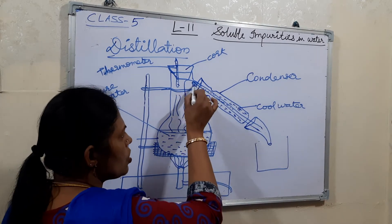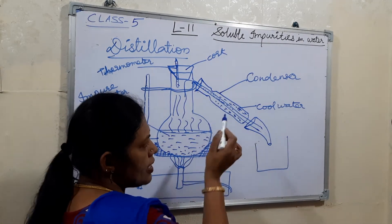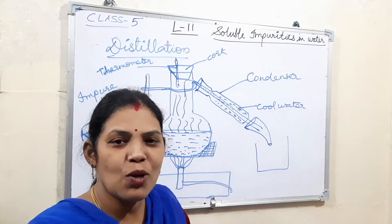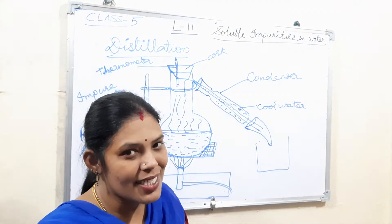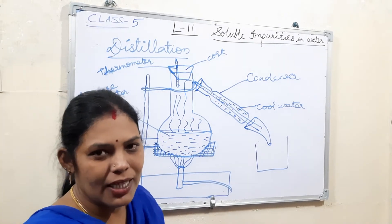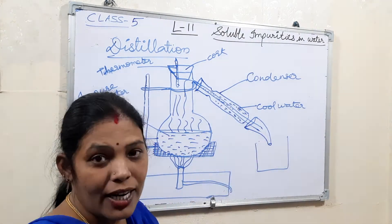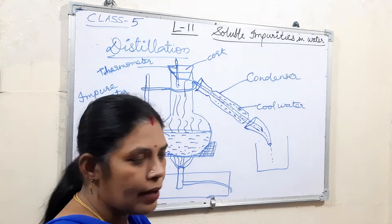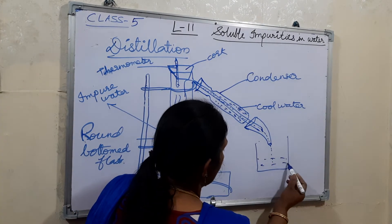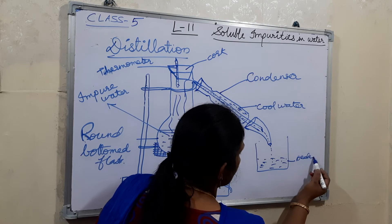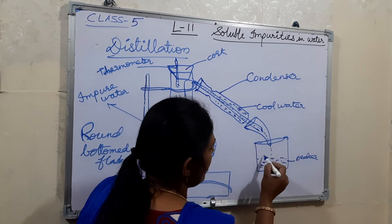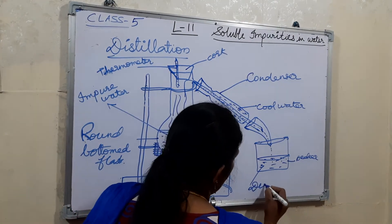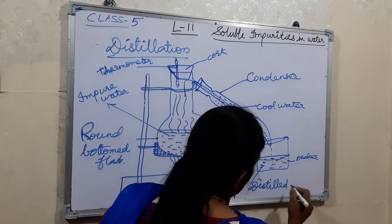When the steam enters the condenser, the cool water already present there cools it down. When the steam gets cooled, it undergoes condensation and changes back into water. It is collected drop by drop and falls into the beaker. The water collected in the beaker is the purest form of water — that is distilled water, also called the distillate.